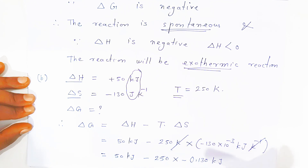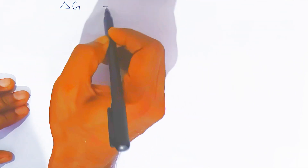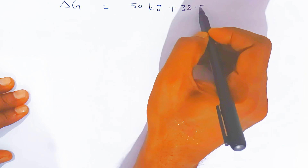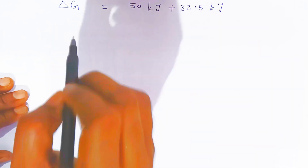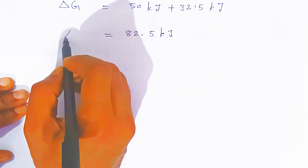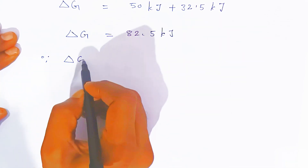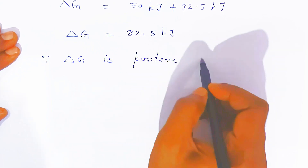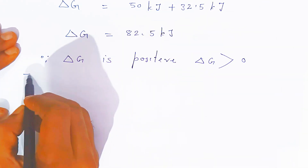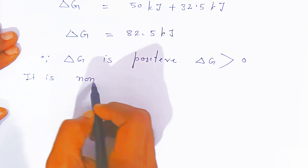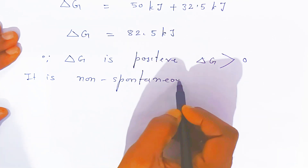You have to multiply — it will become positive. So ΔG will become 50 kilojoule plus 32.5 kilojoule — because negative times negative gives positive. If you add these, it will become 82.5 kilojoule. Since you are getting change in Gibbs energy as positive, since ΔG is positive — that means ΔG is greater than 0 — therefore it is a non-spontaneous reaction.